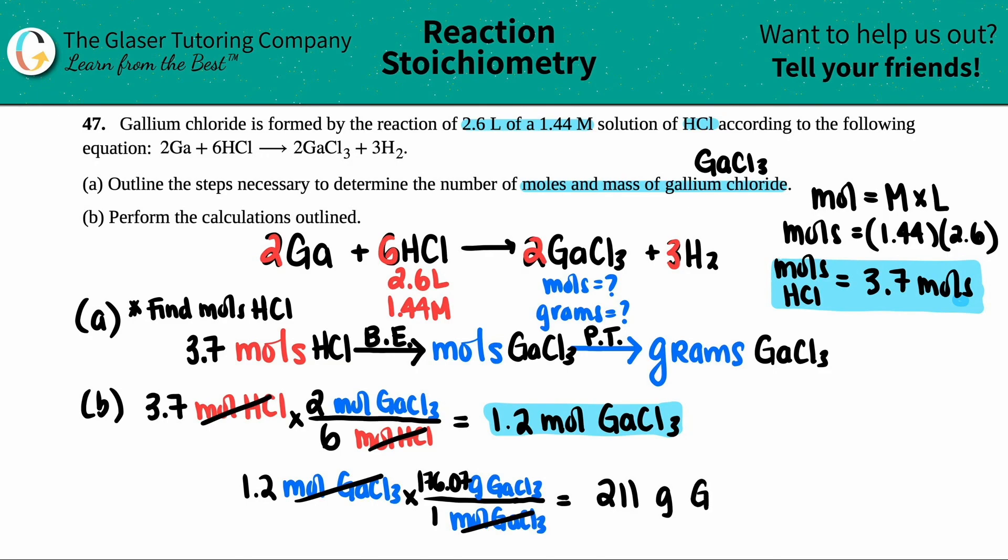211 grams of gallium chloride would be produced. So to just basically sum this up, right? If you had 2.6 liters of a 1.44 molarity solution and you're mixing it with gallium metal, you would produce a max, a theoretical yield of 211 grams of gallium chloride. That's it. And just know that these are the same amount, right? Moles and grams of the same compound is the same amount. It's just different units, right? It's kind of like saying 12 eggs and a dozen. They mean the same thing, but just different units. All right. So hopefully that helps. Let me know in the comments.